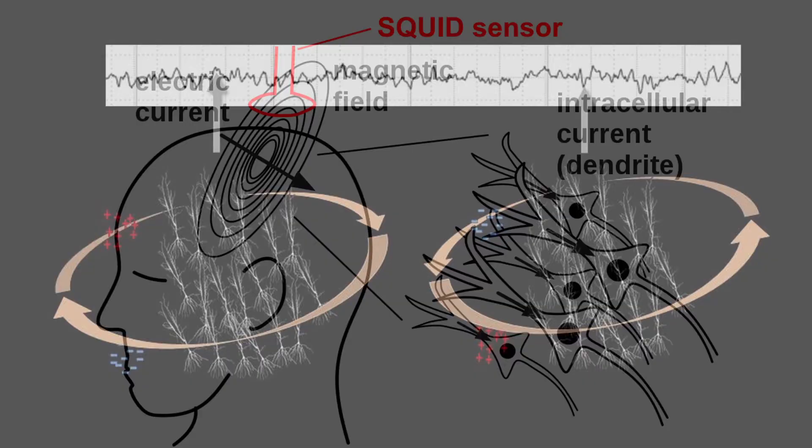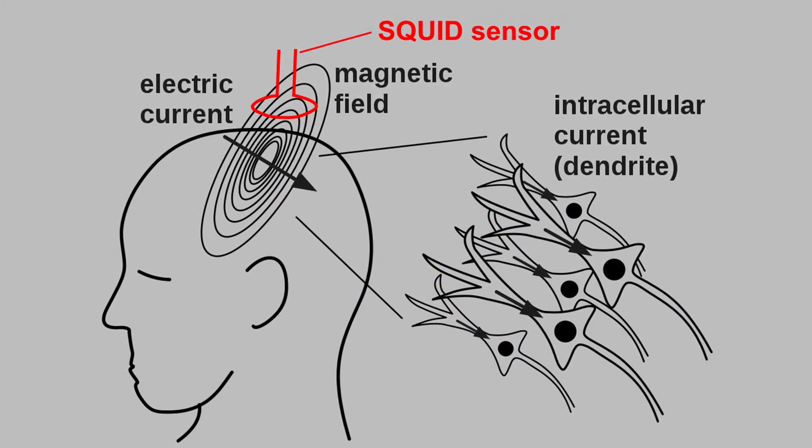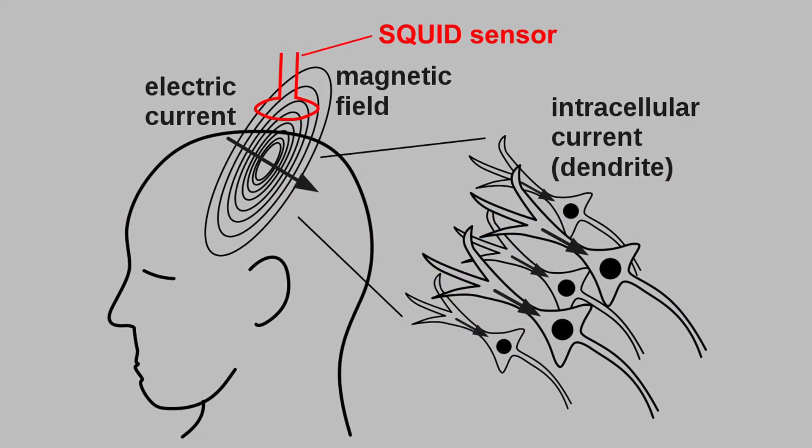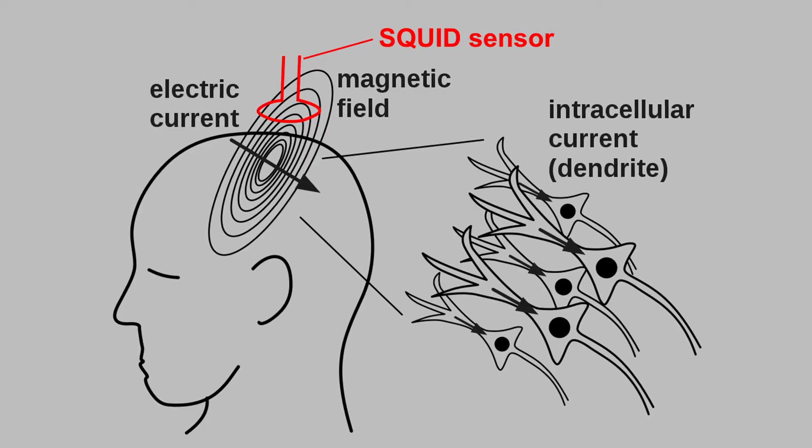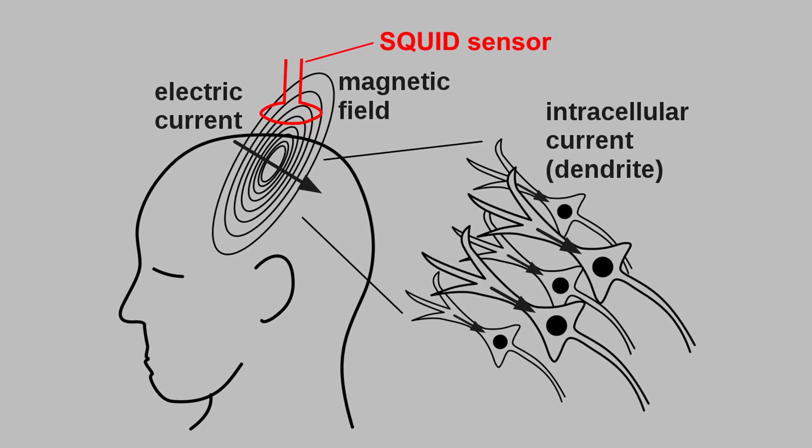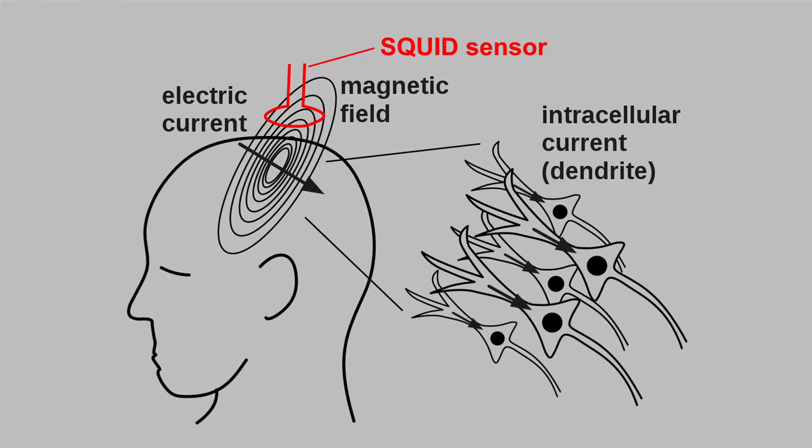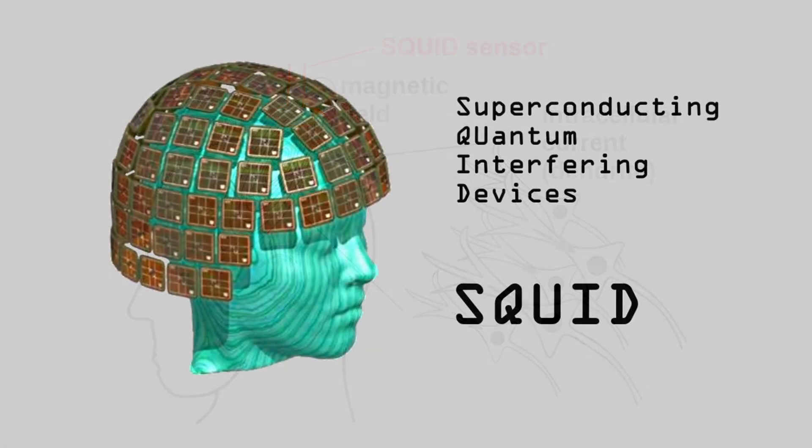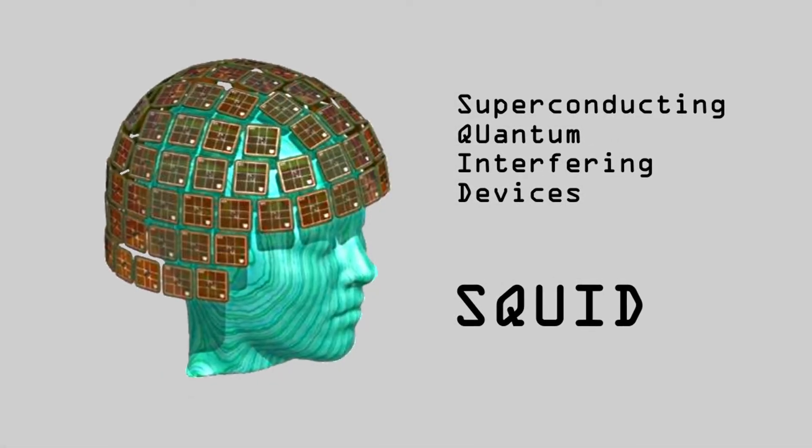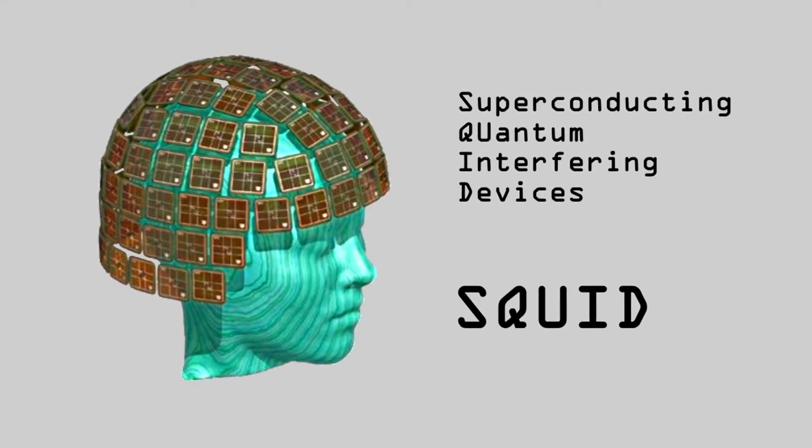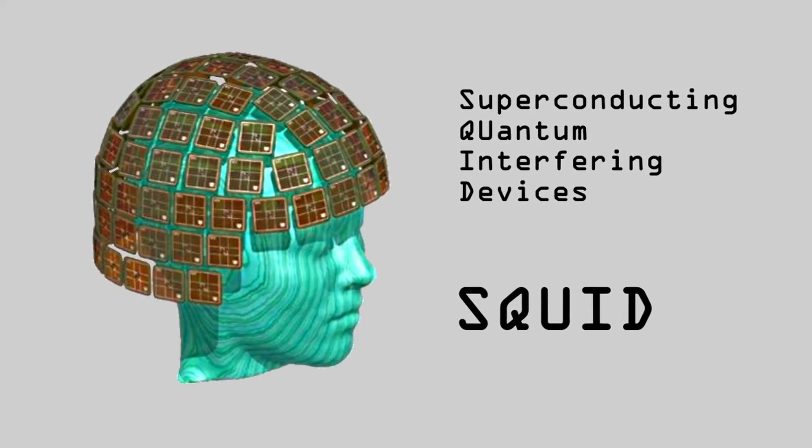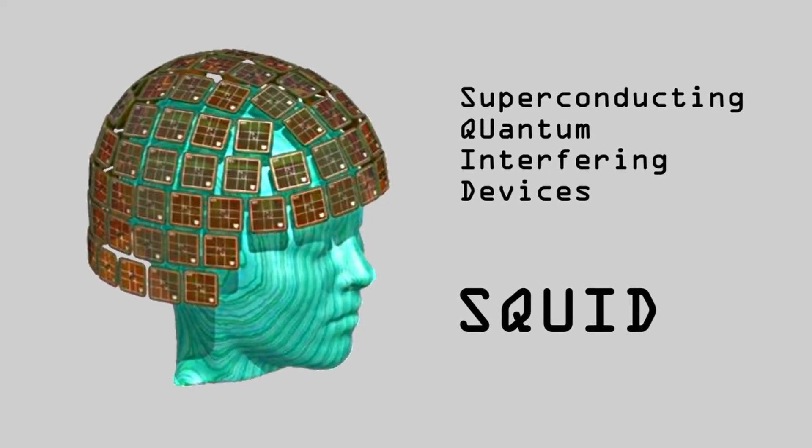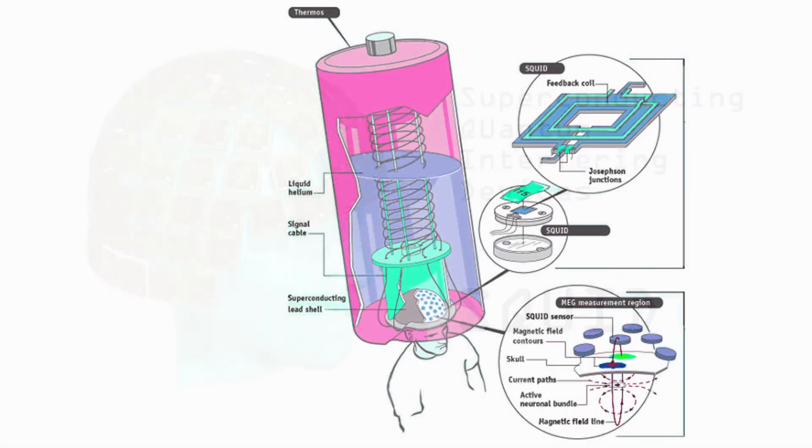So how do these sensors pick up the signal? Well, MEG sensors are called superconducting quantum interference devices, or in short, squids. These small induction coils are cooled to approximately minus 270 degrees Celsius using liquid helium. This allows for superconductance, reducing the signal loss to a minimum.